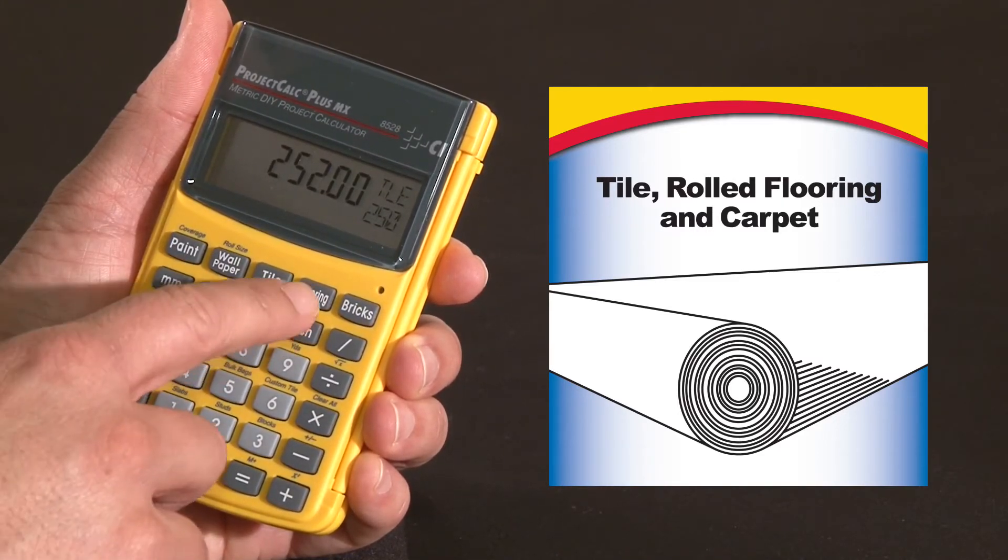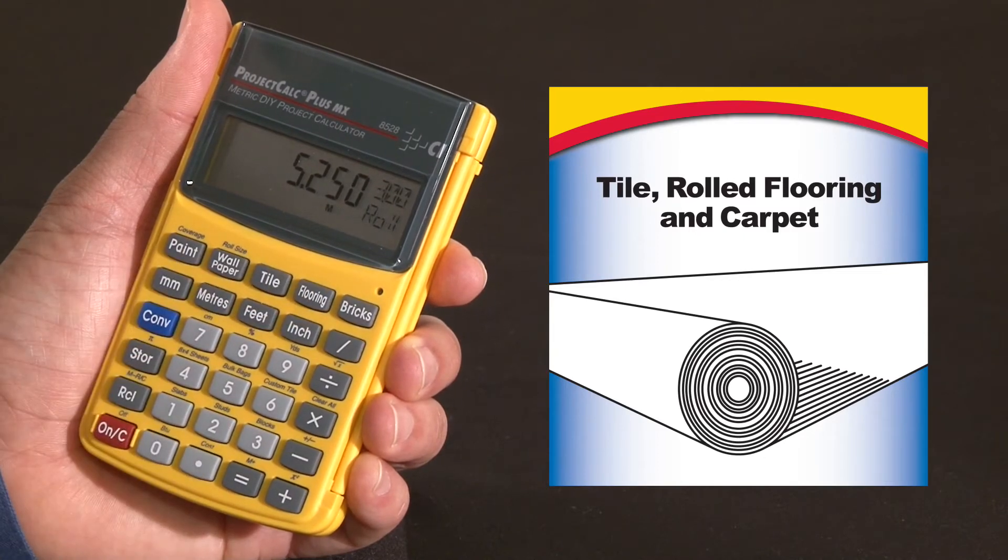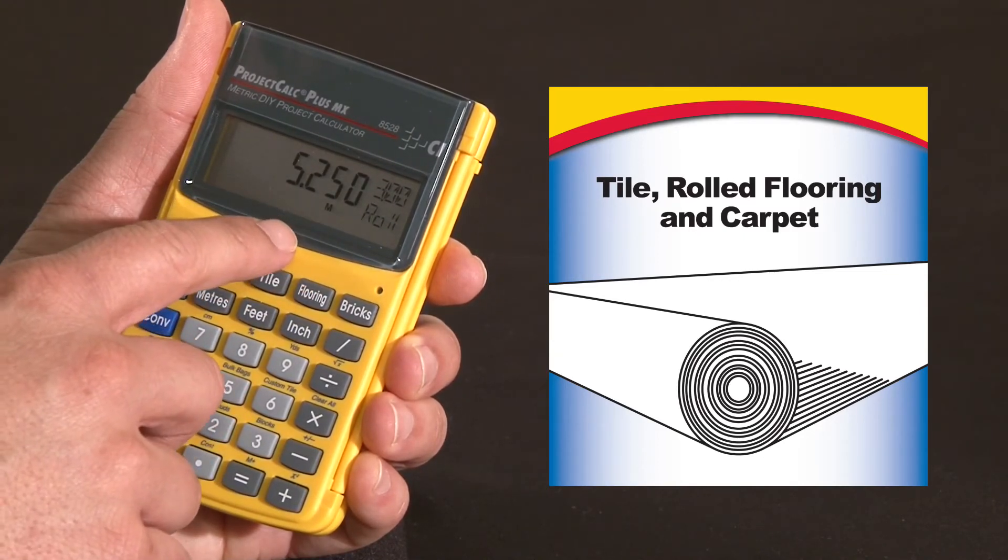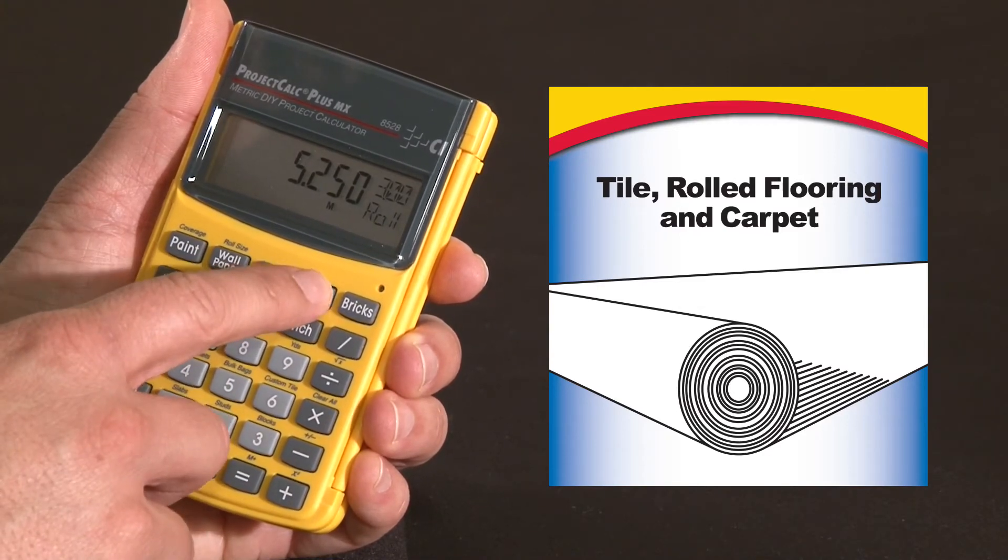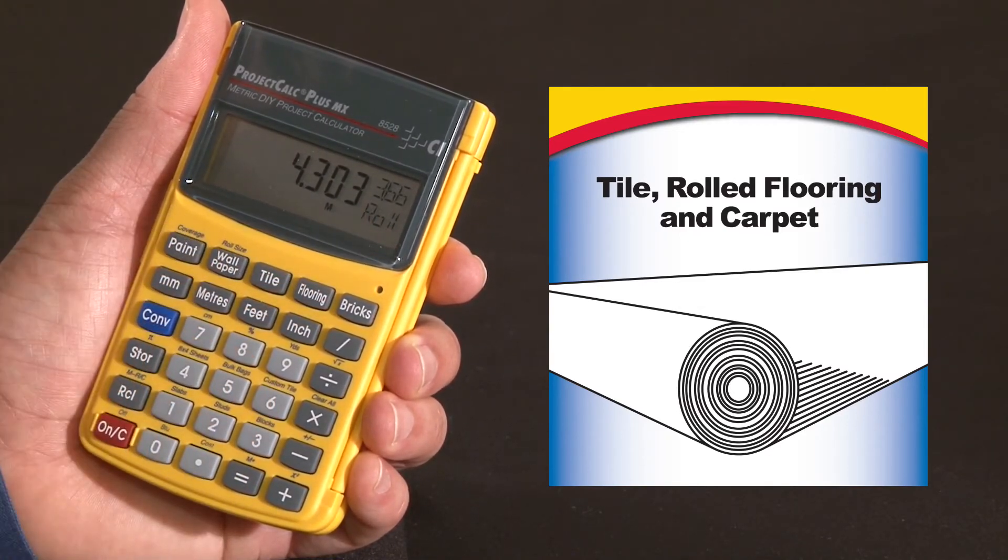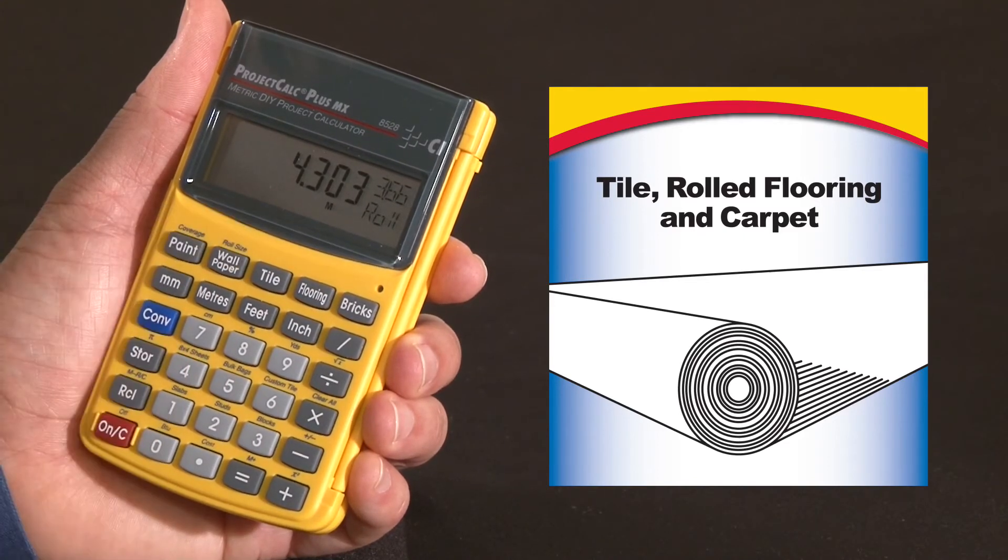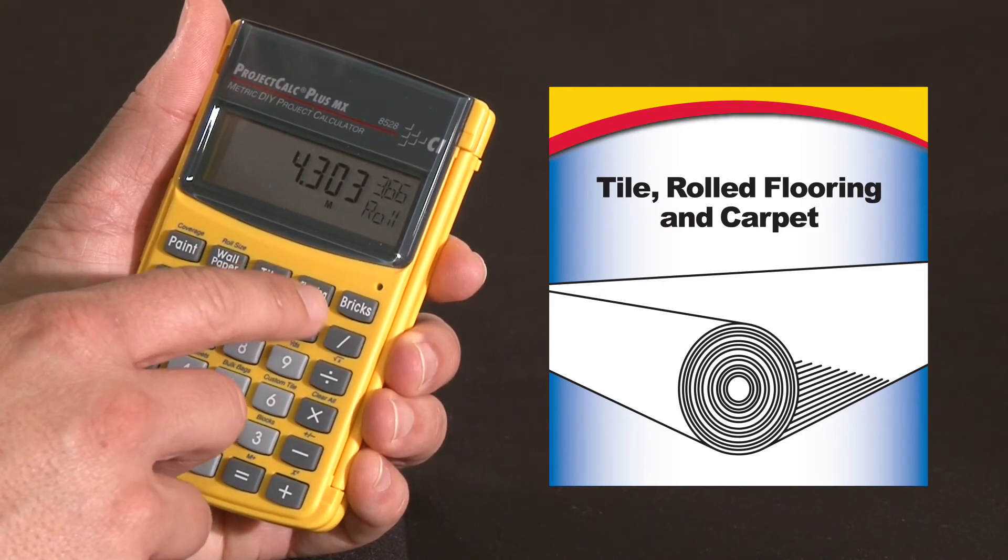And if you'd like to look at flooring, simply press flooring and this will tell you that you need 5.25 linear meters of a 3.0 roll, or you can look at a 3.66 roll and it would require 4.303 linear meters.